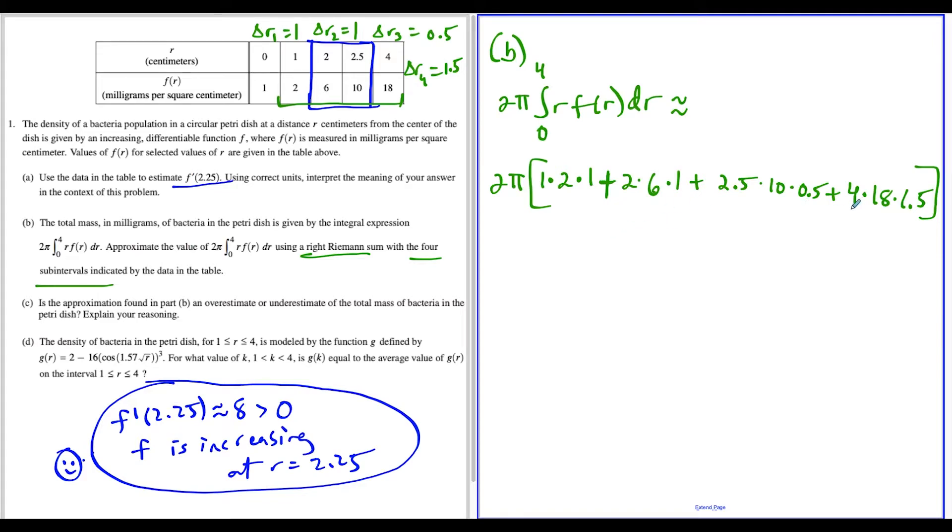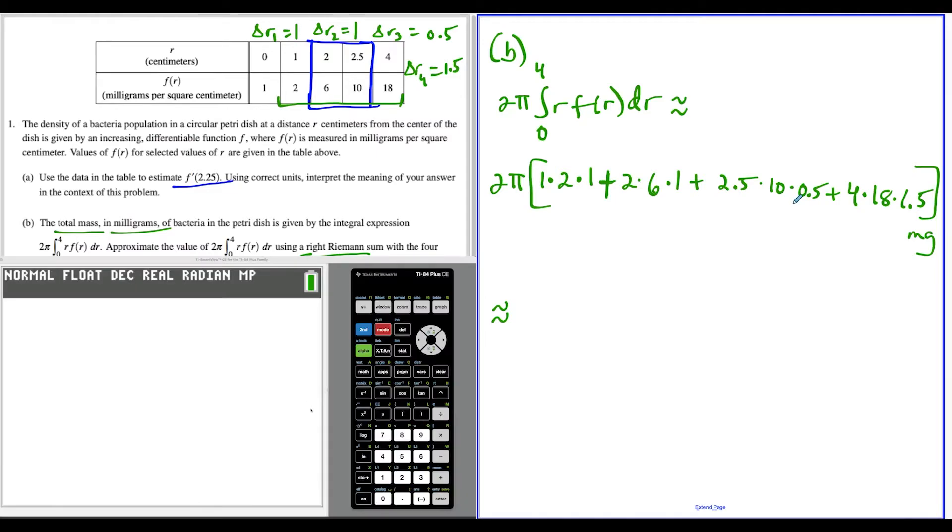From here, we're going to type all of this in. Notice we're calculating the total mass in milligrams. The approximation—we're going to type this whole expression into a calculator. We have 2π, and now everything from before: 1 times 2 times 1 equals 2, plus we have 2 times 6 is 12.